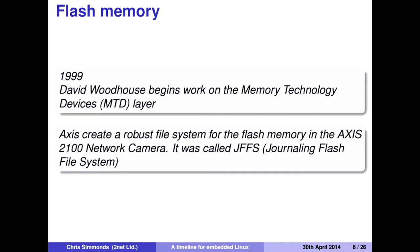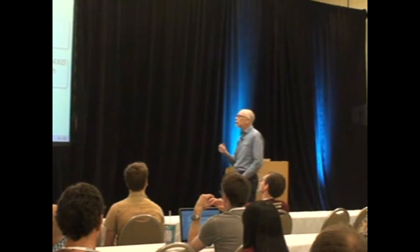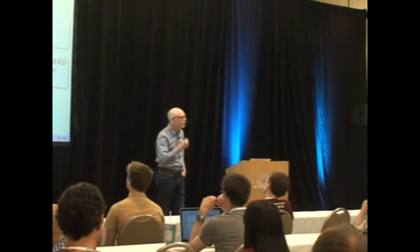Another key technology for embedded devices: embedded devices don't have spinning hard drives or even floppy disks — they have flash memory. Work on this started in 1999 when Dave Woodhouse started work on the Memory Technology Device layer, or MTD layer, which we still use today. Close behind that, a Swedish company called Axis, who do network products, produced the 2100 network camera running Linux. It had NOR flash memory, so they used the MTD layer to access it, and then implemented a file system called JFFS — the Journaling Flash File System version 1 — which for many years was the main flash file system and is still commonly used.